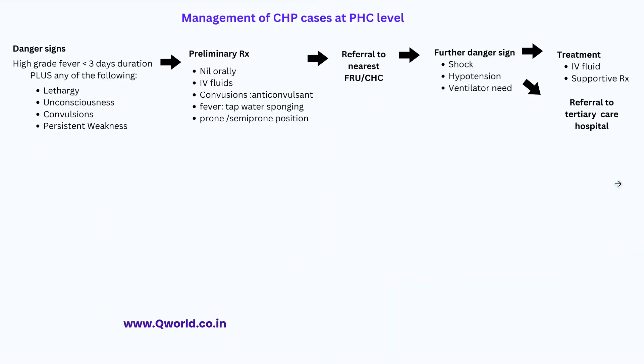At the PHC level, dangerous signs to look for are high-grade fever of less than 3 days' duration plus any CNS features like lethargy, unconsciousness, convulsions, or persistent weakness. Preliminary treatment: give nothing orally, start IV fluids, give anticonvulsants for convulsions, and do tap water sponging for fever. Place the patient in prone or semi-prone position and refer to the nearest CHC or FRU. If further dangerous signs develop like shock or ventilation needs, give IV fluids and refer to the nearest tertiary care hospital.